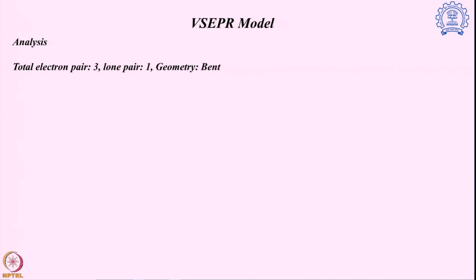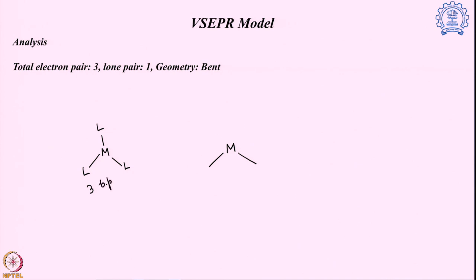Now consider a system with three electron pairs but one of them is a lone pair. For reference, the previous case had three bond pairs and zero lone pairs (LP = lone pair, BP = bond pair). In this new case, we have a total of three electron pairs, but two are bond pairs and one is a lone pair.